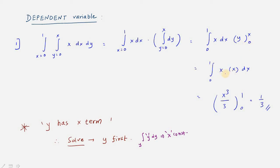Now our remaining integration is x from 0 to 1 of x · x dx, which is x² integrated from 0 to 1. The integral of x² is x³/3. Upper limit 1, lower limit 0, so 1³/3 − 0 = 1/3. The answer is 1/3. So the logic is: y limit has the x term, so solve y first, treating x as constant.